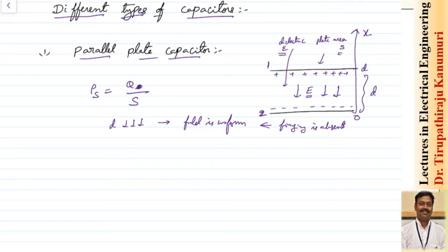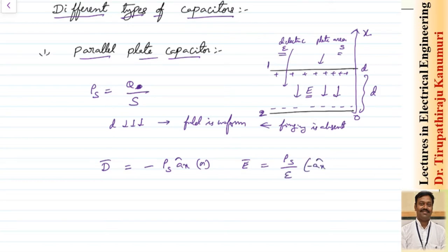The surface charge density ρs equals q divided by S. The flux density D equals minus ρs in the direction of ax. The electric field intensity E can be derived from D equals epsilon times E, giving E equals ρs divided by epsilon, in the direction of ax. Since E is in the negative direction of ax, we write it as minus q divided by epsilon·S in the direction of ax.